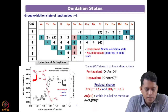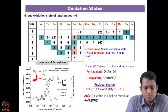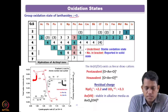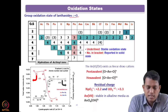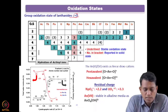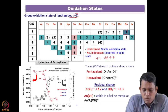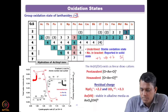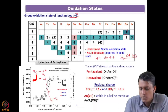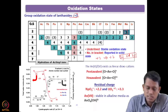Before going to the next lecture, I would like to recap whatever we covered in the previous lecture. We started with electronic configuration and saw that the group oxidation state of lanthanides is +3, whereas actinides can have variable oxidation states starting from +2 to almost +7. This variation in oxidation state is mainly because filling happens in the 5f orbital, which has close proximity with the 6d and 7s orbitals.